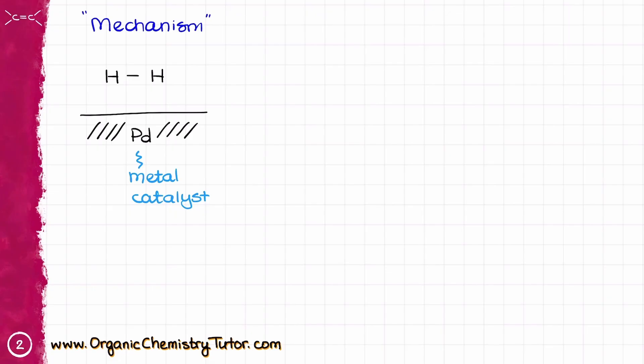So the mechanism starts by the absorption of H2 on our metal catalyst. As a metal catalyst, we can use palladium, platinum, nickel, or what I like to call poor chemist catalyst, palladium on carbon, which is significantly cheaper than regular palladium powder.